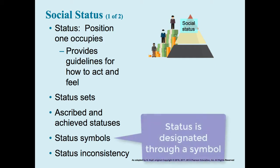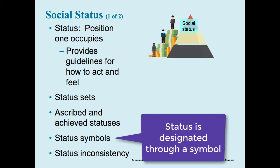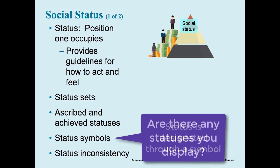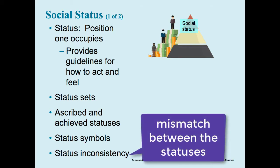Status symbols refer to things that designate our status, like a wedding ring, an expensive car, or a uniform that signifies who we work for — such as in law enforcement or the uniform a UPS driver wears. We generally find ways to display our status. There's also something called status inconsistency, which occurs when there is a mismatch between our statuses — for instance, a high school student who is also a parent, or a truck driver with a graduate degree.